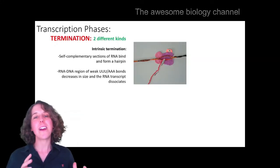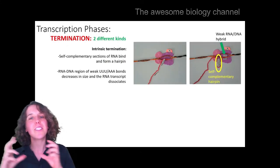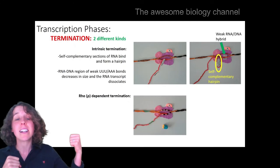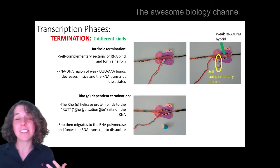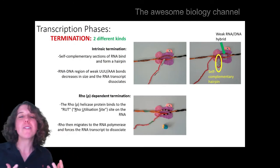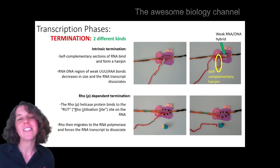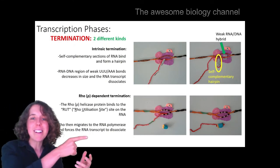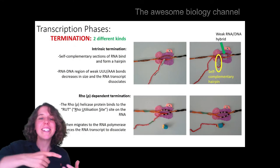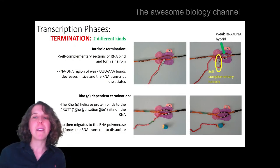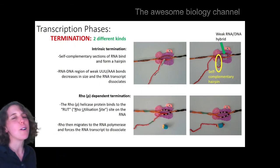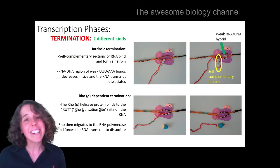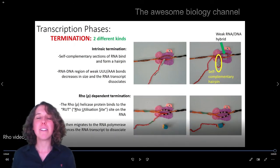So we had intrinsic termination where we had that hairpin just next to a region of A's and U's of weak binding, which meant that RNA transcript could come apart from the DNA. And then we had rho-dependent termination, where we had this rho-helicase protein come and bind to a RUT site on the RNA transcript and then it motioned up the transcript and migrated up all the way to the polymerase enzyme where it acted as a helicase and it pulled apart that RNA from that DNA. I am so stoked for rho-dependent termination that I got my skateboard and a remote-controlled car and I acted it out in my backyard. Please click on that video if you're interested.